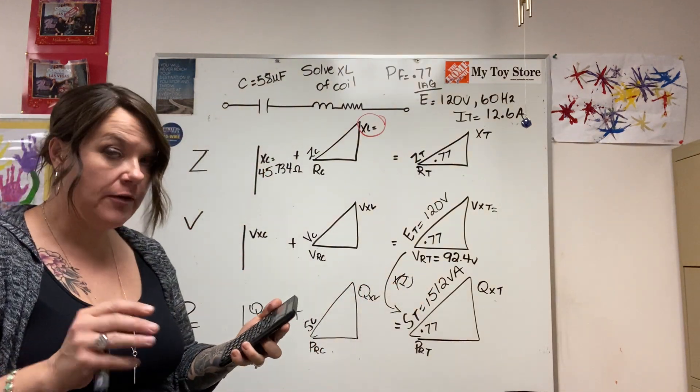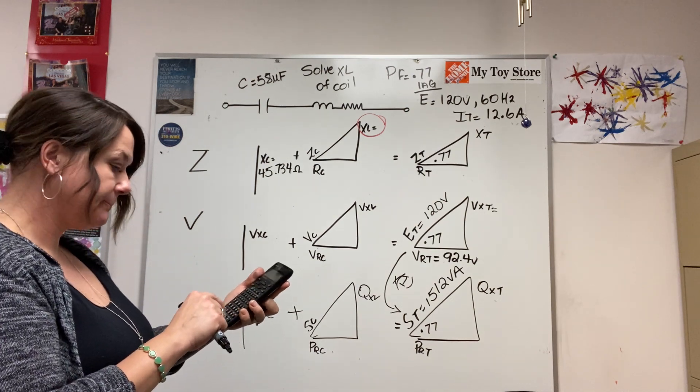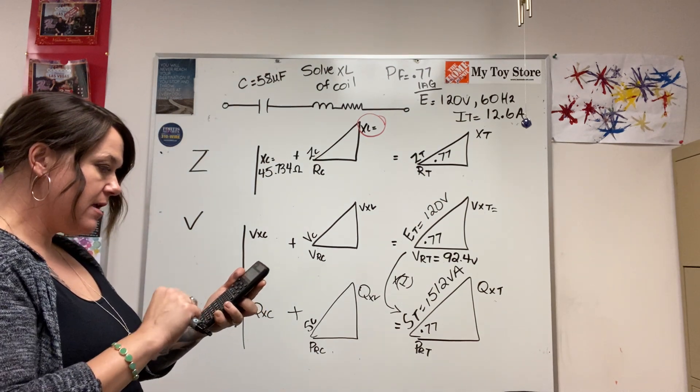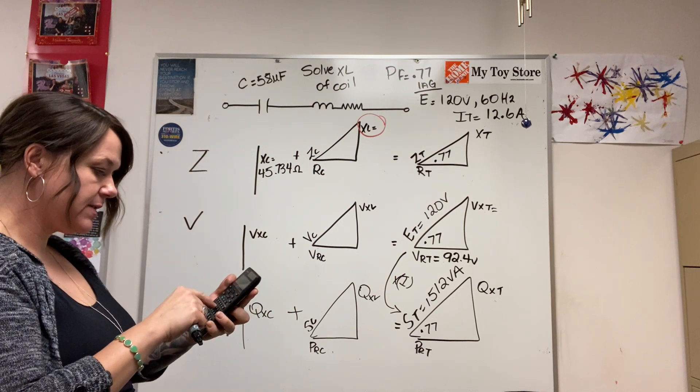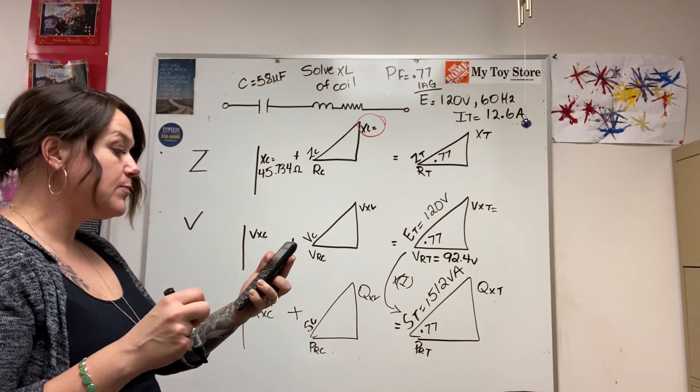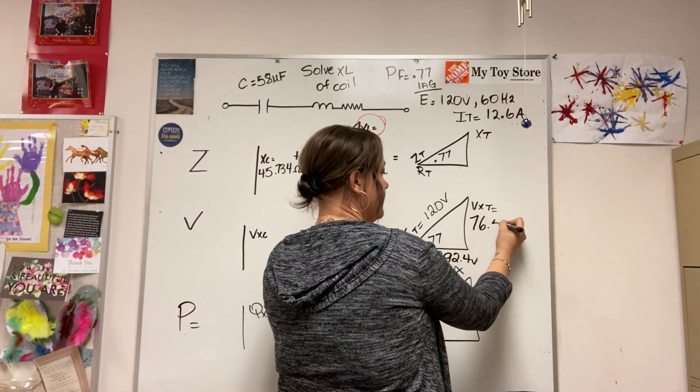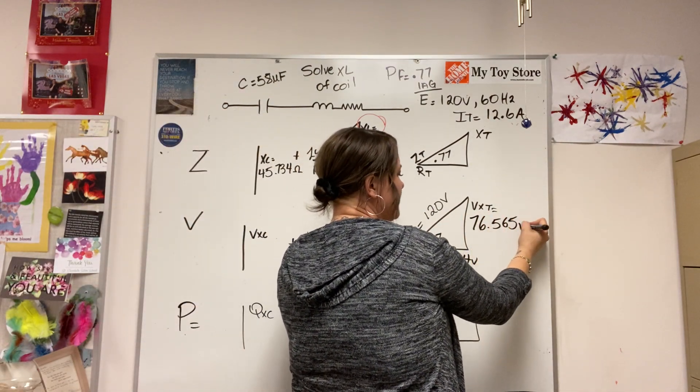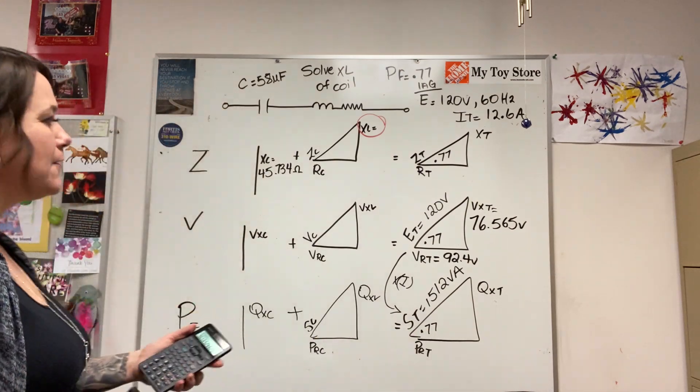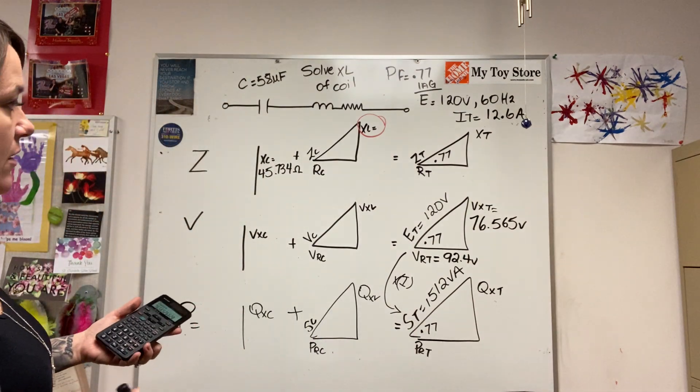Again, you should be very comfortable with performing that in your calculator. Equals, function square root, 76.565. I like to go three decimal places. Again, rounding can affect your overall answer.